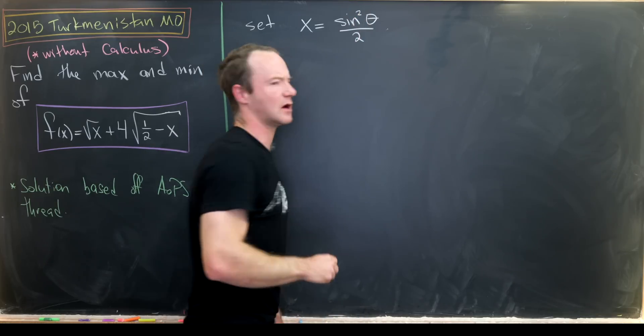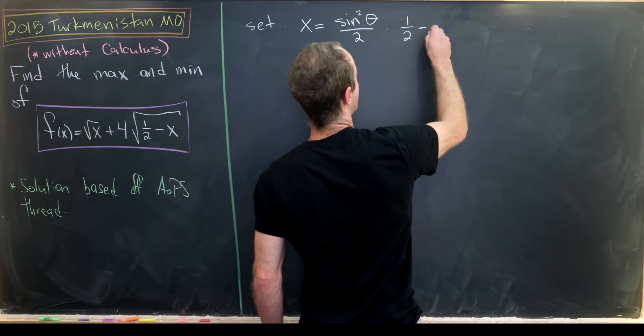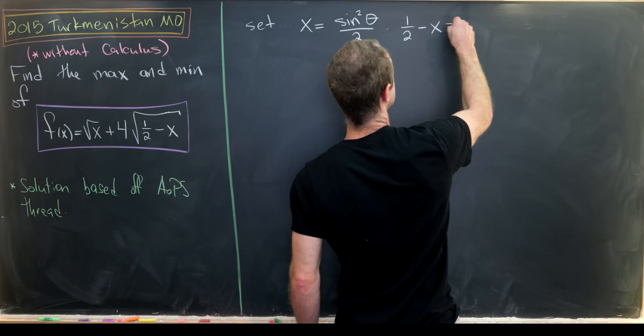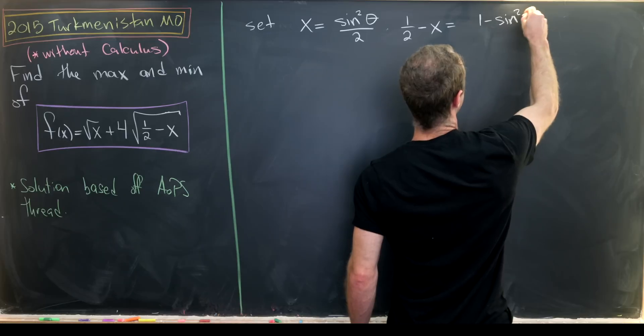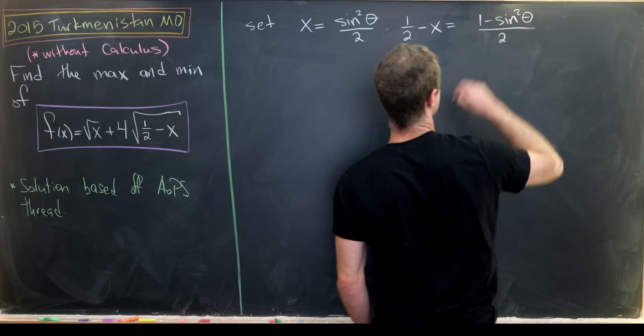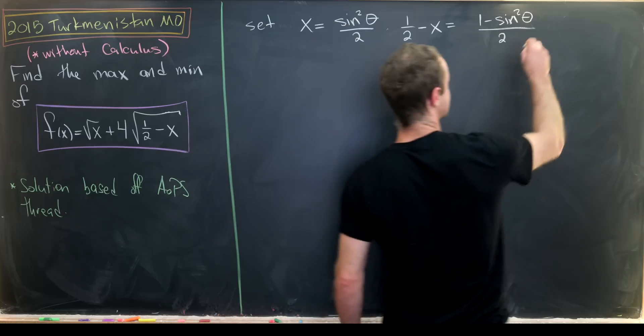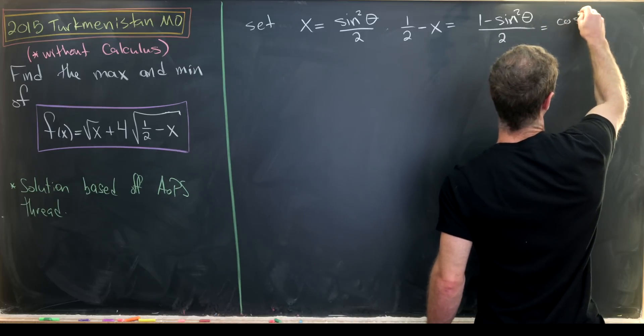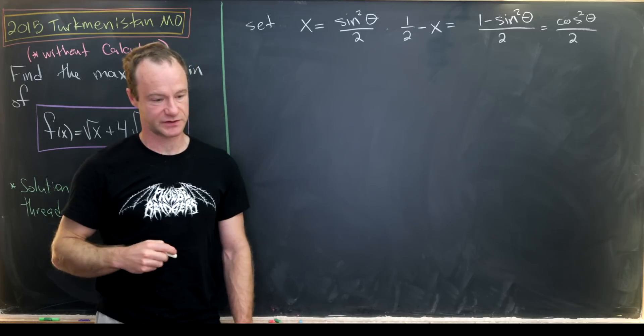And you might say, well, why do we want to do that? That's because with this, we have 1 half minus x is the same thing as 1 minus the sine squared of theta over 2. But 1 minus sine squared of theta is exactly the cosine squared of theta. So we have this is the cosine squared of theta over 2.